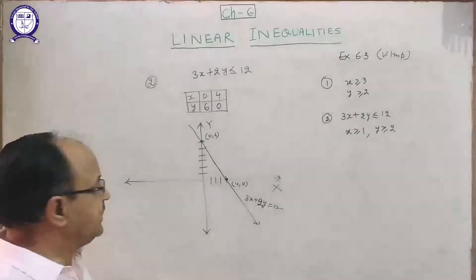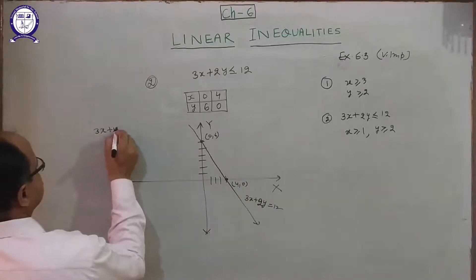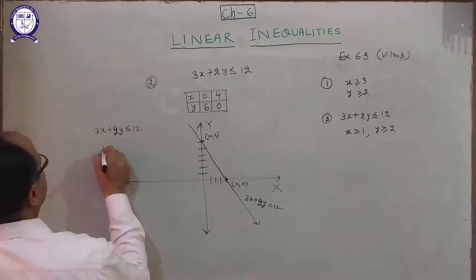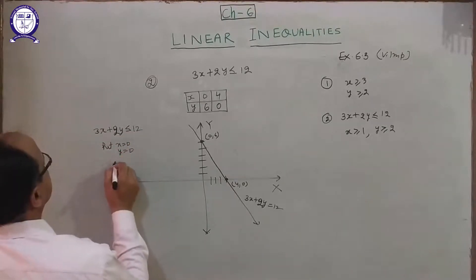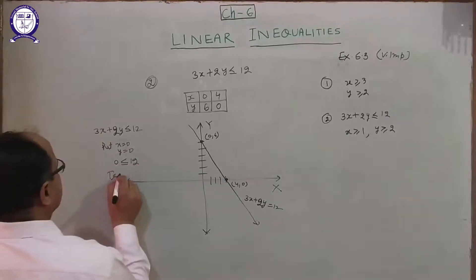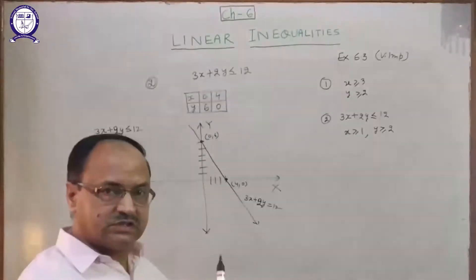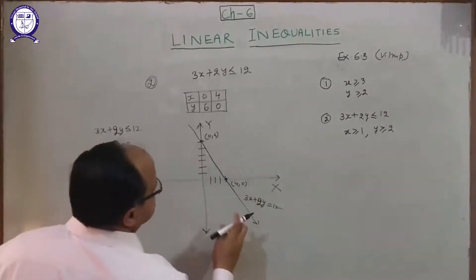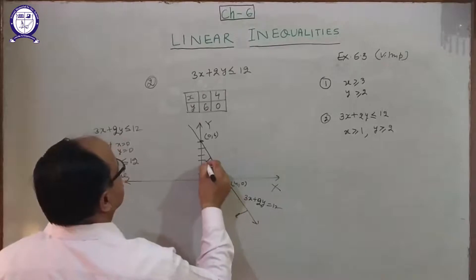Which is the shaded region for 3x plus 2y less than or equal to 12? Put x equal to 0 and y equal to 0: 0 less than or equal to 12, which is true. If it is true, the shaded portion lies towards the origin. So the shaded portion is towards the origin — this portion here.